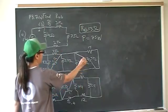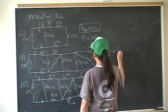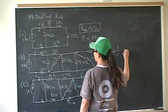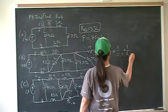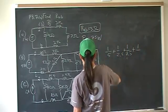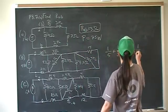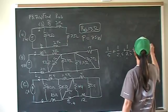So this whole chunk of parallel can be reduced to 1 over 5 plus 1 over 2.5 plus 1 over 7.5 plus 1 over 5 plus 1 over 15.